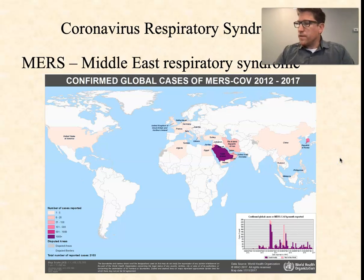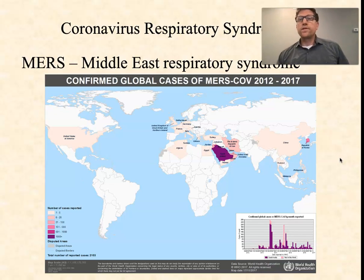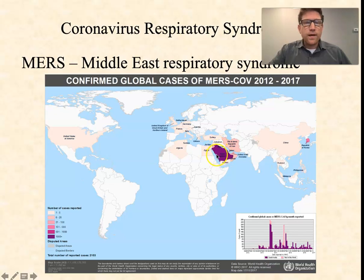MERS was a little bit different. With SARS, the source was likely bats. With MERS, the source has been linked to camels, of all things. Not surprisingly, the major MERS outbreak was in the Saudi Arabian Peninsula and the surrounding region.